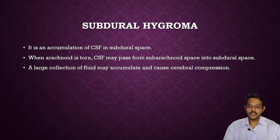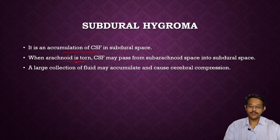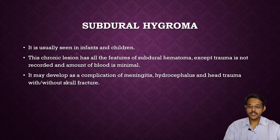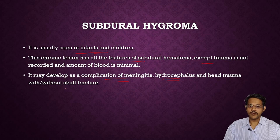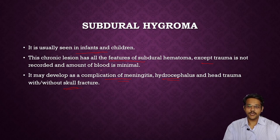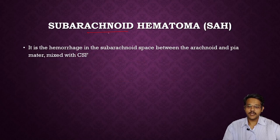Subdural hygroma is a variant of subdural hematoma in which the subdural space is occupied by CSF rather than blood. It occurs mainly when the arachnoid is torn, allowing CSF to flow from the subarachnoid space into the subdural space, causing a large collection of fluid and cerebral compression. It is usually seen in infants and children. This chronic lesion has all features of subdural hematoma except trauma. Complications include meningitis, hydrocephalus, and hematoma with cortical scar fractures.